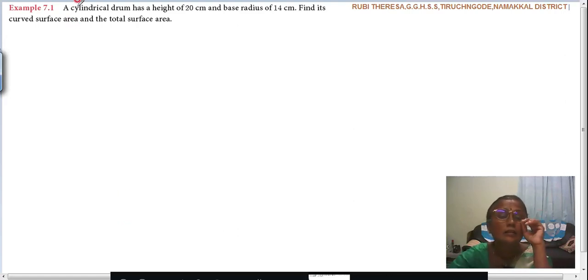Now listen here. A cylindrical drum has a height of 20 cm and base radius of 14 cm. First, what is given? Height of the cylinder.